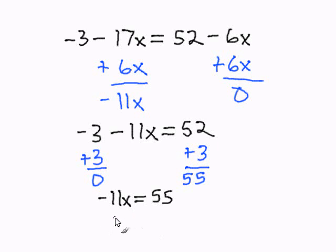To get x by itself, I have to get rid of negative 11. I'm going to divide both sides by negative 11. Negative 11 divided by negative 11 will cancel out, and 55 divided by negative 11 will be negative 5.